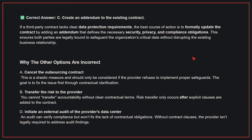This ensures both parties are legally bound to safeguard the organization's critical data without disrupting the existing business relationship. Why are the other options incorrect? A: Cancel the outsourcing contract — this is a drastic measure and should only be considered if the provider refuses to implement proper safeguards; the goal is to fix the issue first through contractual clarification. B: Transfer the risk to the provider — you cannot transfer accountability without clear contractual terms; risk transfer only occurs after explicit clauses are added to the contract.